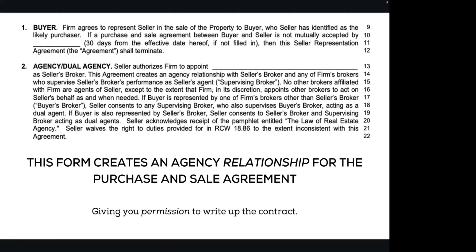The buyer has already been identified. This just means you are not going to actively seek that seller's buyer — you're going to have that seller bring you the buyer they have already found. You can make multiple contracts for this if they have several different buyers, but be really careful doing this because you don't want to be seen as having a pocket listing, because it's not legal. When you create your agency relationship — that's what paragraph two is — you are stating very clearly the relationship you have with the seller and getting permission to write up the contract.